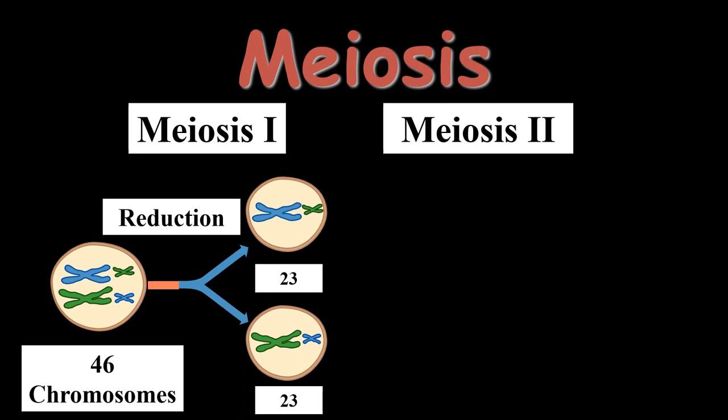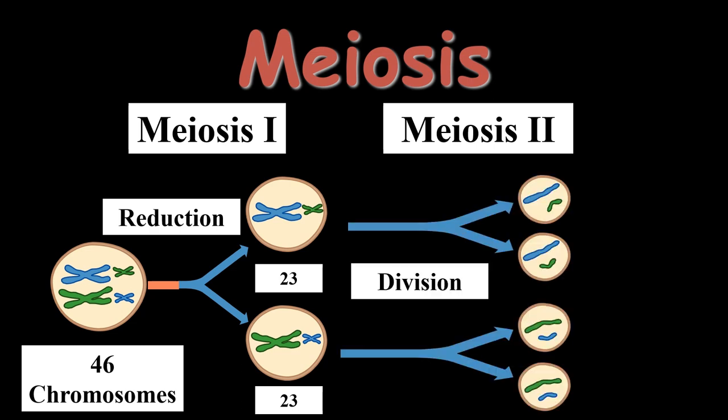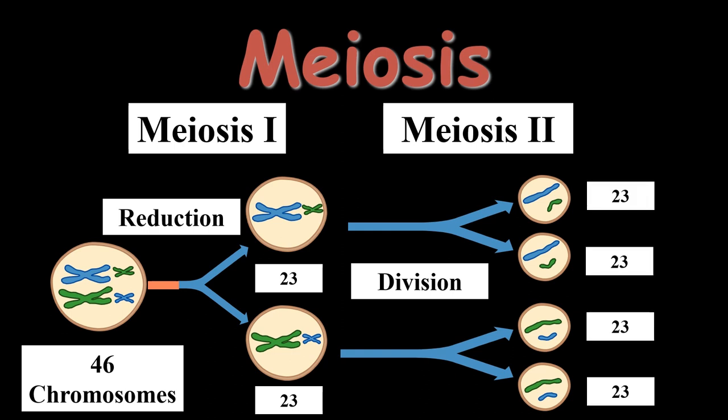Meiosis 1 is followed by Meiosis 2, which is also known as the division phase. Since the number of chromosomes are already halved in Meiosis 1, Meiosis 2 only involves division of cells. Each daughter cell gives rise to two daughter cells, so at the end of Meiosis 2 there will be four daughter cells, each containing 23 chromosomes — half that of the parent cell.